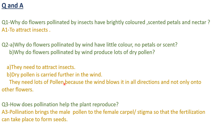These are the questions and answers. Why do flowers pollinated by insects have brightly colored, scented petals and nectar? Because all these things are required to attract the insects. Why do flowers pollinated by wind have little color, no petals, or scent? Because they do not need to attract insects. Why do flowers pollinated by wind produce lots of dry pollen? Because dry pollen is carried further in the wind. They need lots of pollen because the wind blows in all directions and not only onto other flowers — unlike bees which take pollen directly to the next flower.